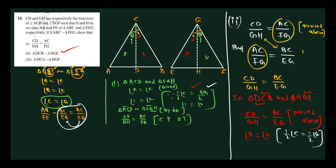By AA similarity, triangle DCB is similar to triangle HGE. By AA similarity.